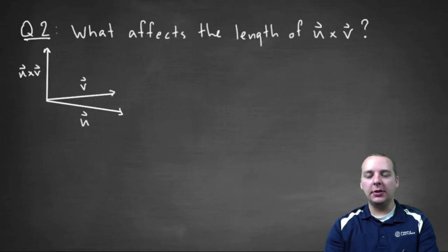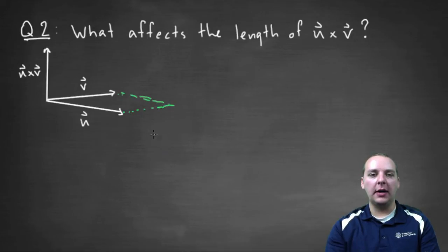So to answer that question, here's what the magnitude of the cross product is. If you look at u and v, if you notice, you can very naturally finish out a parallelogram for u and v, like so, kind of turn it into a box type of shape.